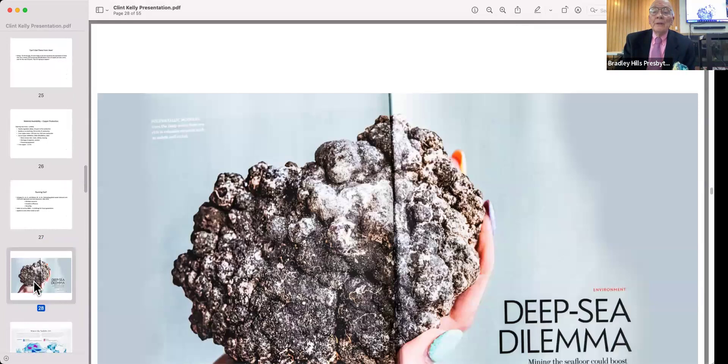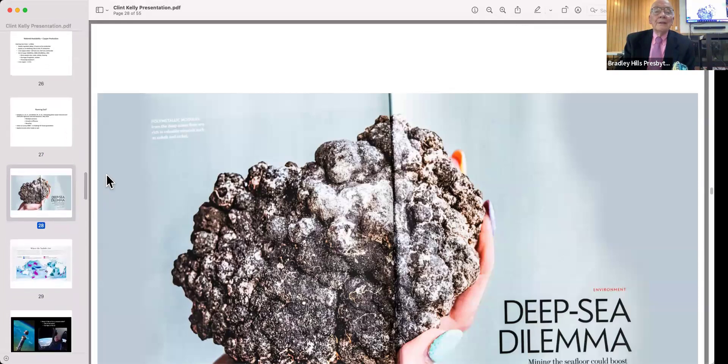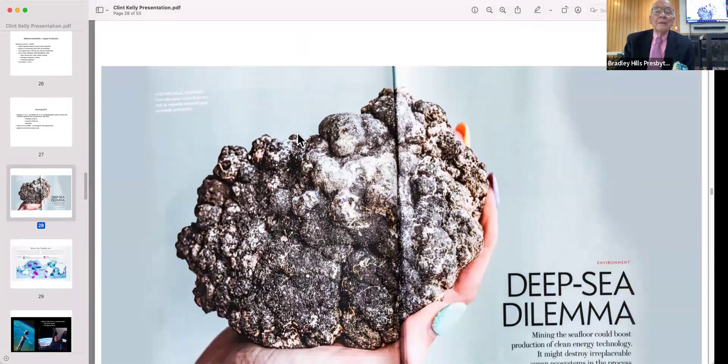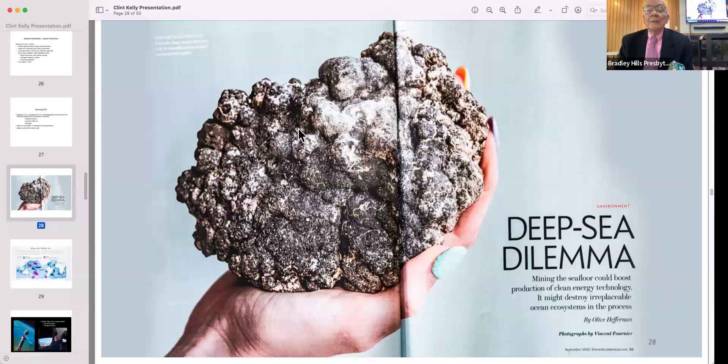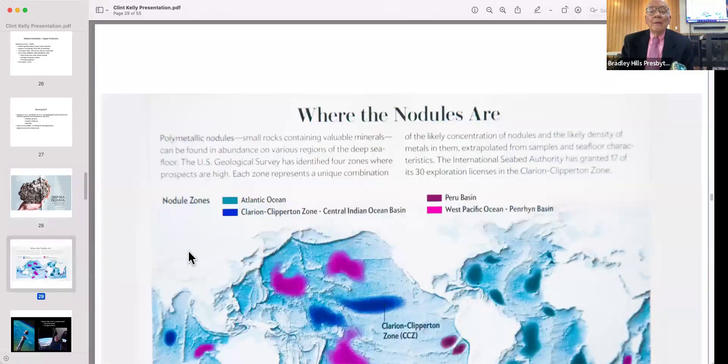If we're running out of copper, what do we do? We can pick up nodules off the sea floor. That's what one of these nodules looks like. You find copper, you find manganese, you find rare earth elements, all kinds of things in there. Estimates are that it's in the billions of tons.